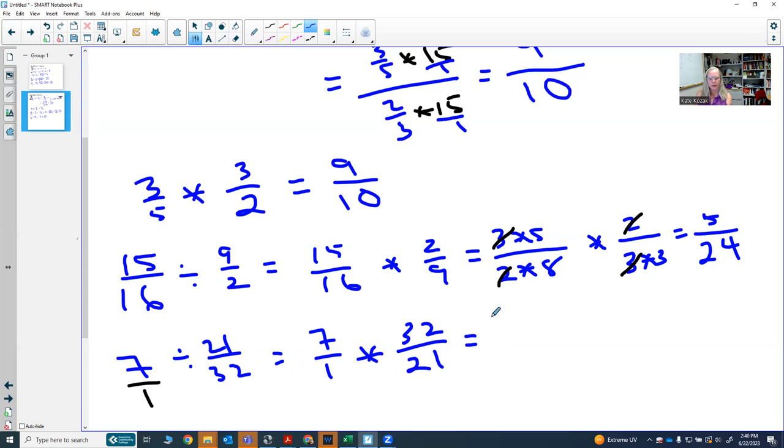Then again, seven is already in factored form. One is already factored. 32, we could write that as four times eight. 21, you could write as three times seven. I noticed I had a seven common in the top and bottom, so you could divide the top by seven, divide the bottom by seven, make them as one. And then you get 32 over three.